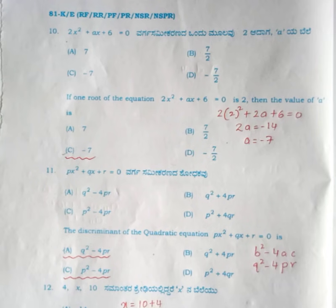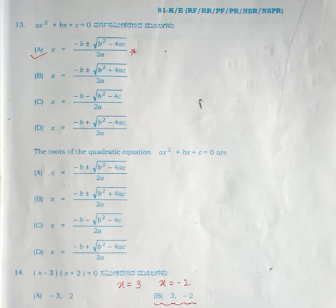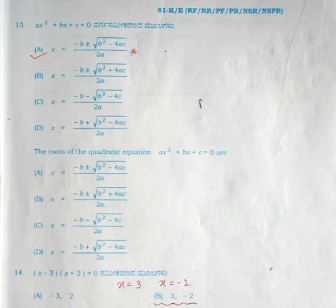For question number 11, the correct answer is option A. For the twelfth question, the correct answer is option D, 7. For question number 13, the correct answer is option A: x equals minus B plus or minus root B squared minus 4ac divided by 2a — a direct question. For the next question, the correct answer is option B: 3, minus 2.